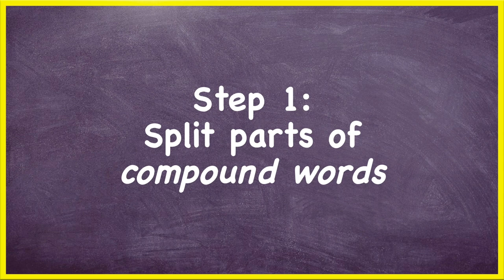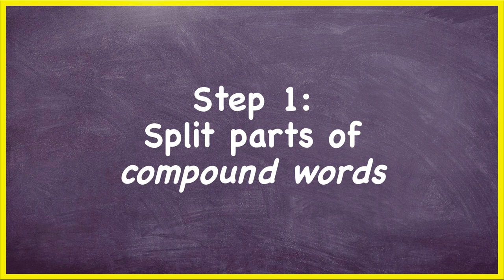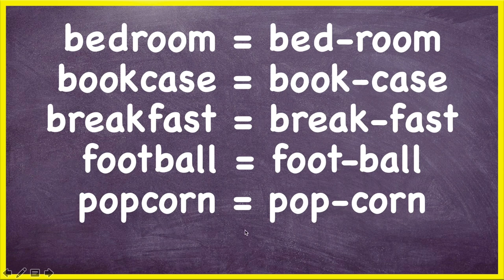Step one: if it's a compound word, then you split the compound word. A compound word is a word that is made up of two words — or more than one word. For example: bedroom, bookcase, breakfast, football, popcorn. In each word, there are two words. We have bed and room, so you split bed and room. Book and case — bookcase. Breakfast, football, popcorn. This is step one because it's the easiest to understand. However, if it's not a compound word — and most words are not compound words — then you go to step two.